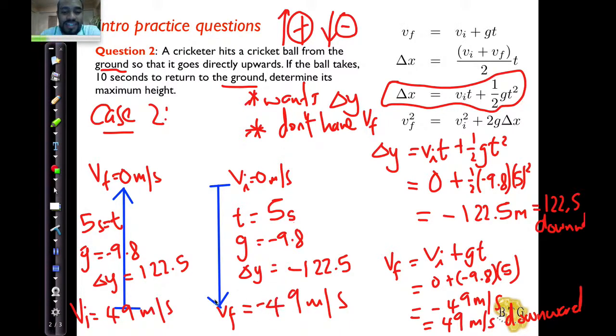The directions, in terms of velocity, is in opposite directions. And that's an example of a case two question. And it's all about how you read it. From the ground to the ground. From a reference point to the same reference point. Up from here, down to there. Good luck.